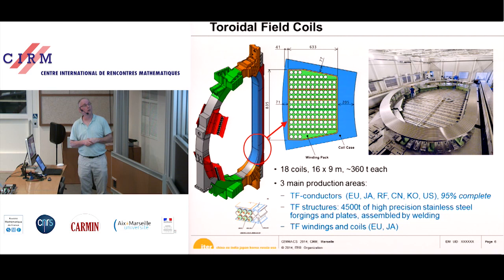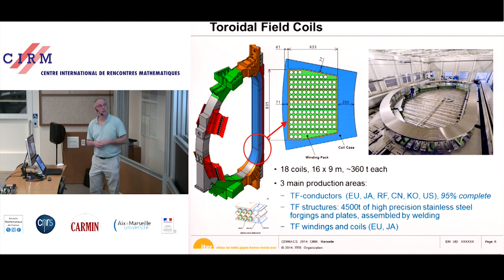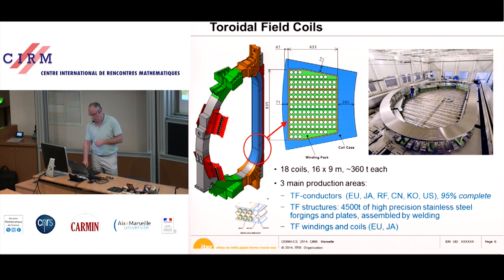The superconductors are almost ready — 95% complete — made by all partners of ITER. The structure is being made now. The coils themselves will be made by Europe and Japan, 9 and 10 coils respectively.